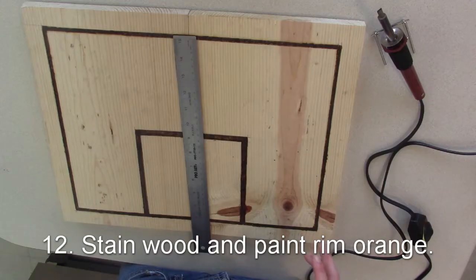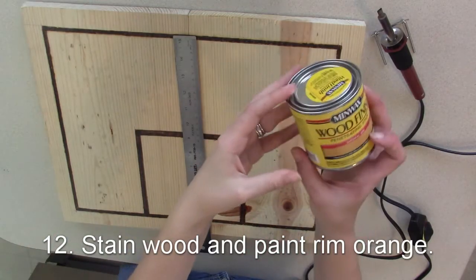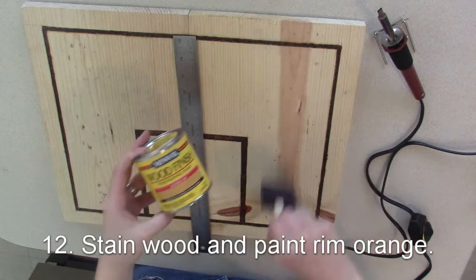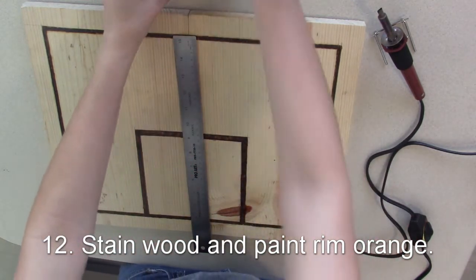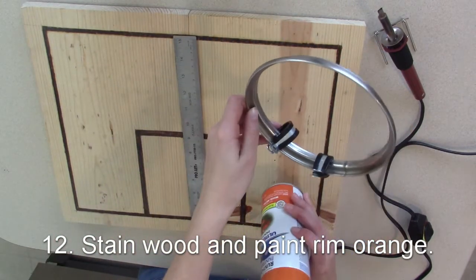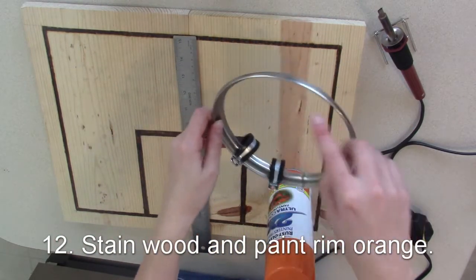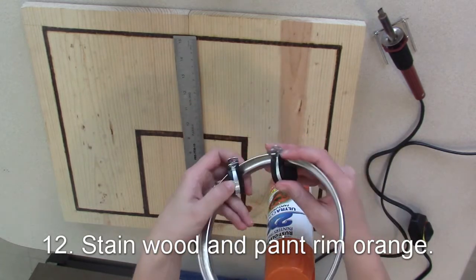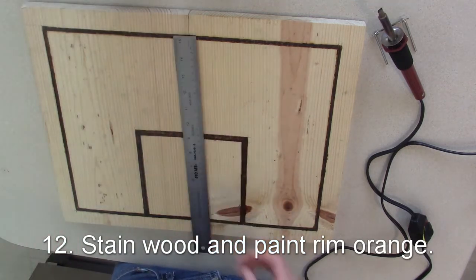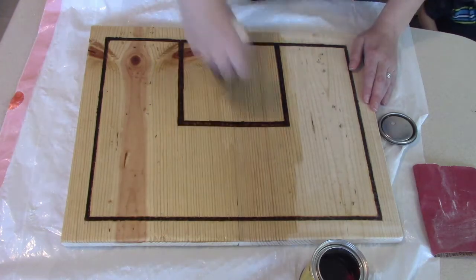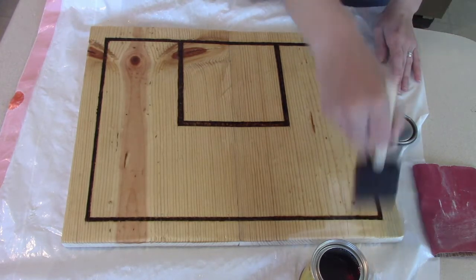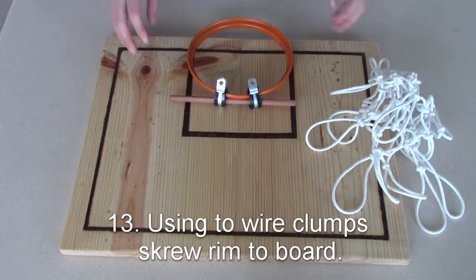And I stained the wood after burning the edges. And then I used wire clamps that I got from Home Depot. They're like two bucks for two of them and they're about an inch wide. So I had to add a dowel to make it a tight fit with the rim and I screwed that down to the board and centered it in the square.